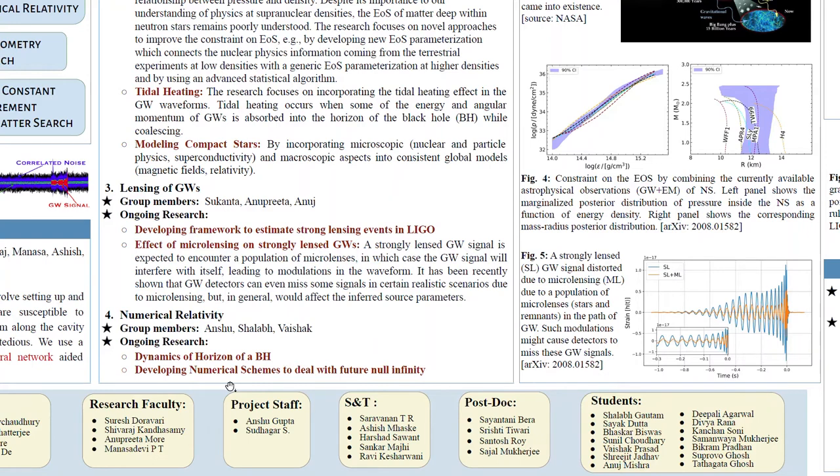Another is about developing some numerical schemes to deal with future null infinity. That is a bit technical so I won't go in much detail but what it means is that theoretically what we have and putting it into the computer are two quite different tasks. In a computer you cannot put infinity, you have to take into account of those things somehow and also you cannot even describe what is event horizon in your computer because the event horizon concept itself requires complete information about your space as well as time. This is the idea that the group is also working on, developing some numerical schemes that can be used in numerical relativity in the future.